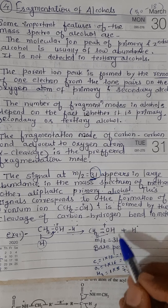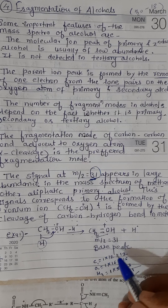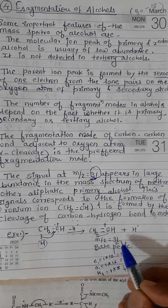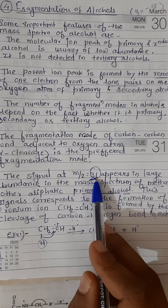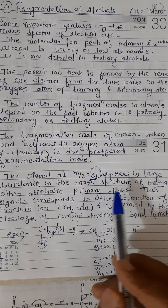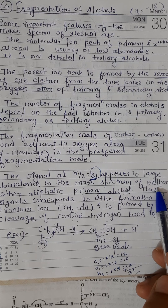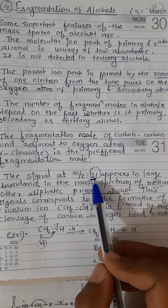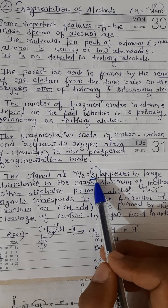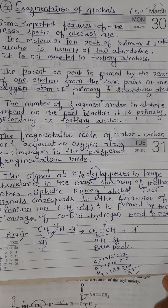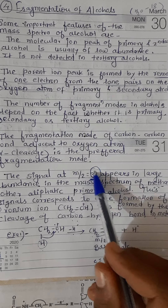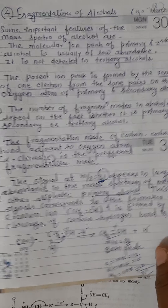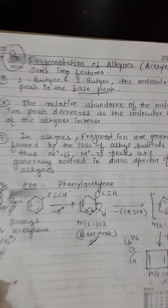So in this point we said that generally in the mass spectrum of methanol, we get a signal of large abundance at m/z = 31. This m/z = 31 value is also found in other aliphatic primary alcohols as well.